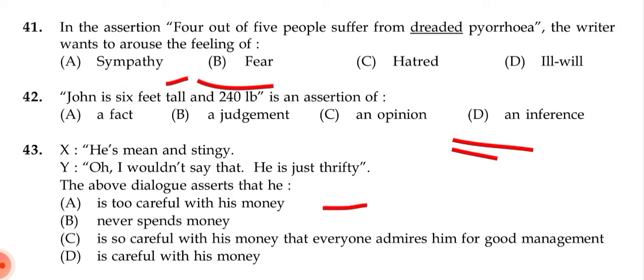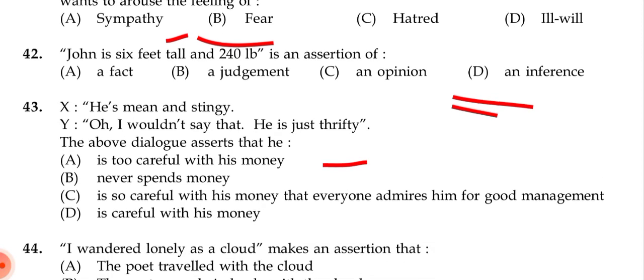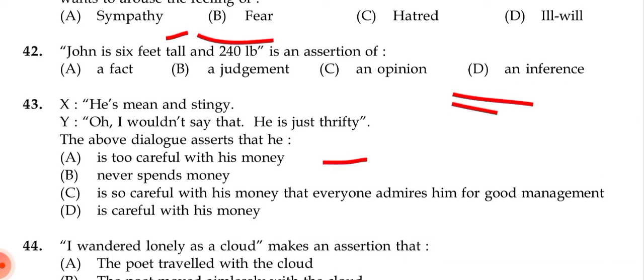Question 41: 'Four out of five people suffer from dreaded pyorrhea' — the writer wants to arouse the feeling of — (a) sympathy, (b) fear, (c) hatred, (d) ill will. The correct answer is (b) fear. Question 42: 'John is six feet tall and two hundred and forty pounds' is an assertion of — (a) effect, (b) judgment, (c) opinion, (d) inference. The correct answer is (d) inference.